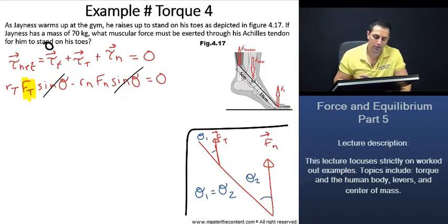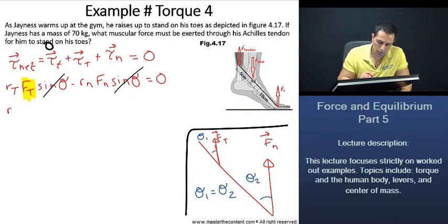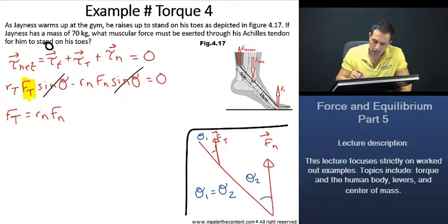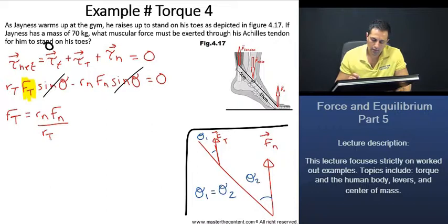That actually simplifies our equation. And as it simplifies our equation, let's just isolate here for what we need. That's going to give us the force normal times the distance from where that force is being applied over the distance from where that tendon force is being applied.